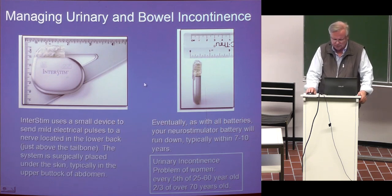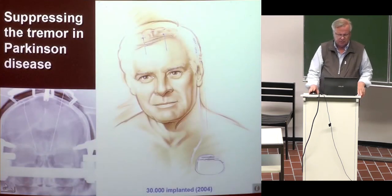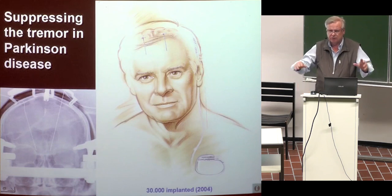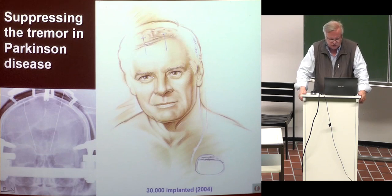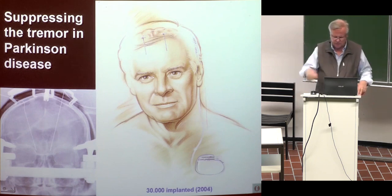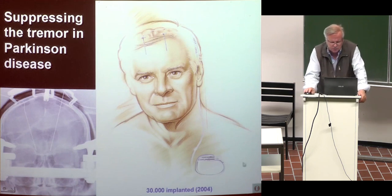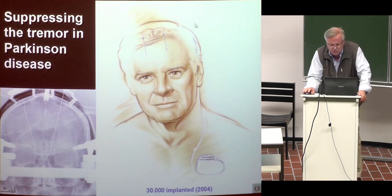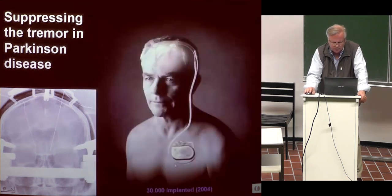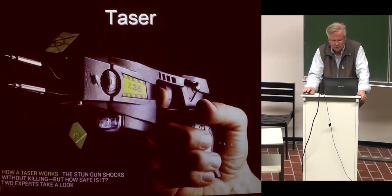For Parkinson's disease patients who have muscular tremors making it difficult to perform everyday tasks — even eating with fork and knife — it is possible to install a stimulator with electrodes placed deep in a certain region of the brain. These are quite common; about 30,000 were implanted in 2004. This is a common application of functional electrical stimulation.